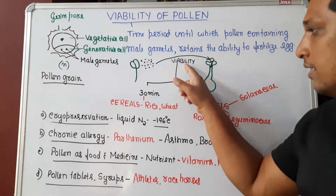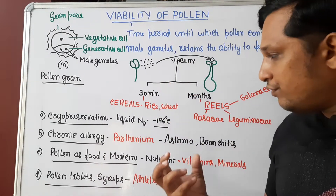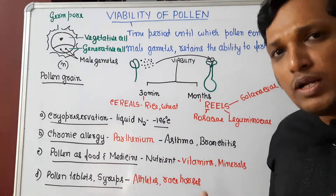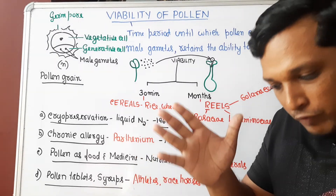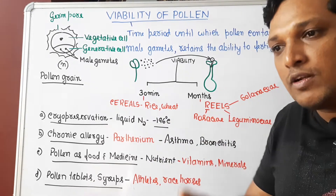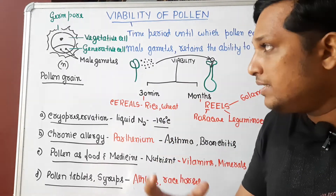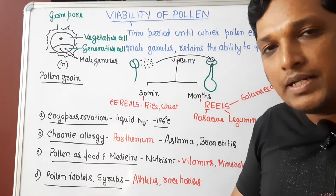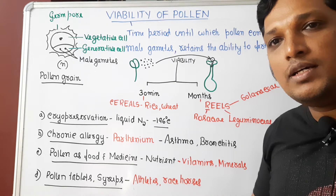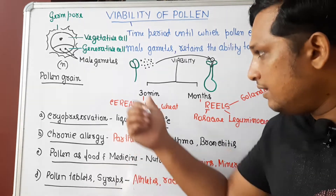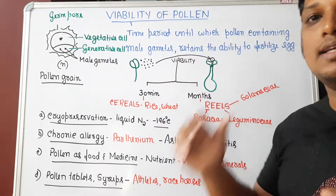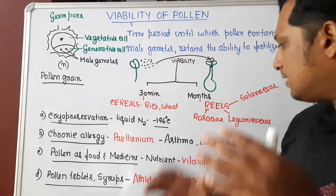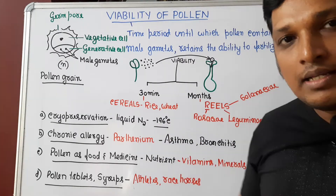The viability period is not the same in all pollen grains — it varies from plant to plant. For cereals like rice and wheat, the viability period is only 30 minutes. This means the male gamete present in the pollen must fertilize the egg within 30 minutes. If fertilization occurs after three hours, the male gamete won't be able to fertilize the egg, as it will have lost its viability.